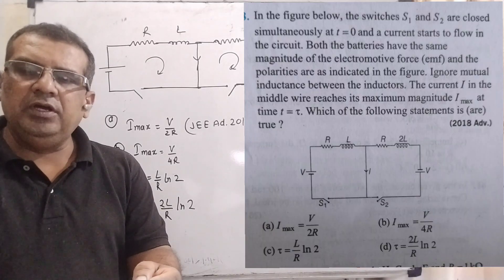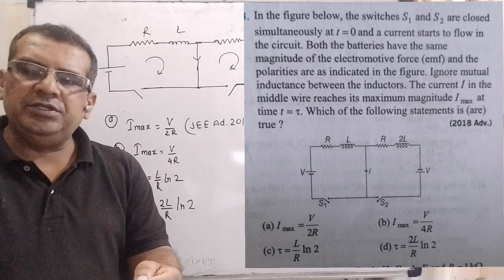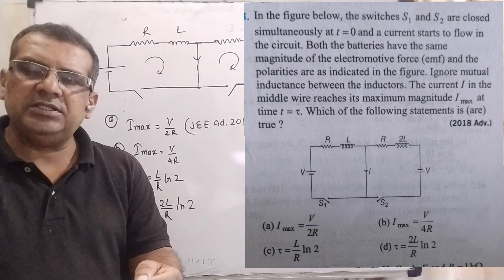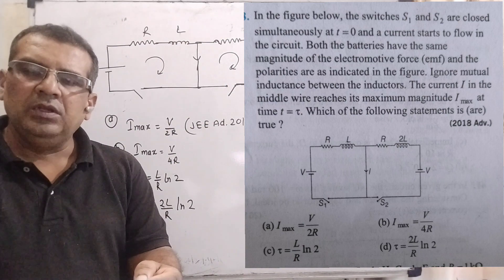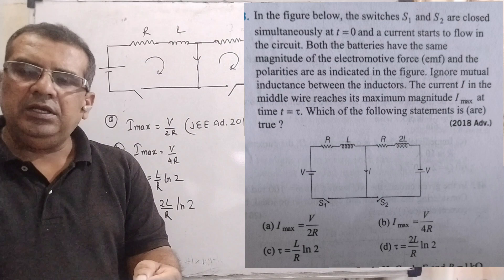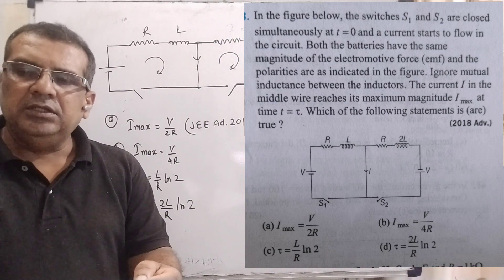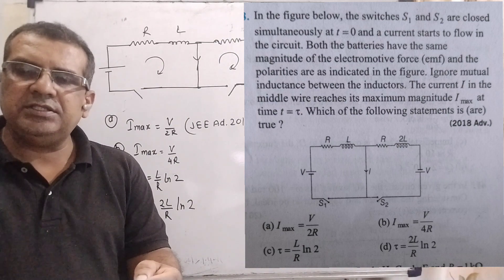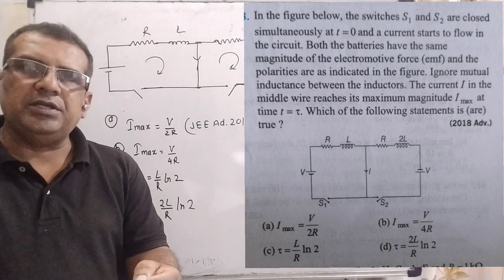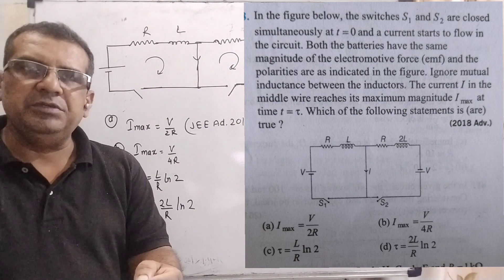Here is the question. In the figure below, the switches S1 and S2 are closed simultaneously at t equal to 0, and a current starts to flow in the circuit. Both the batteries have the same magnitude of the electromotive force, means emf, and the polarities are as indicated in the figure. It means multiple choice question.